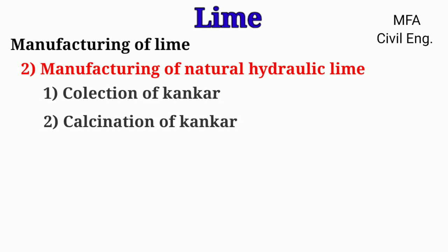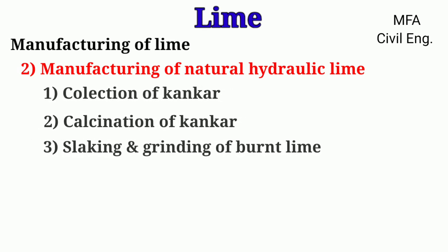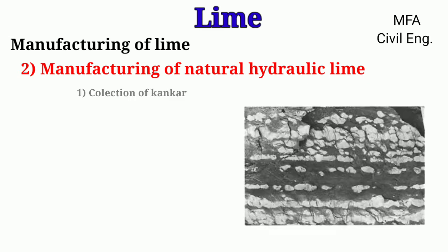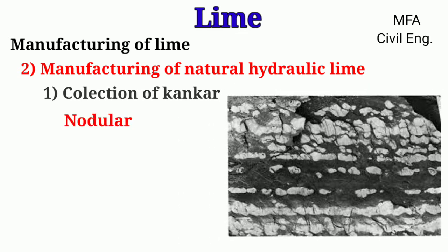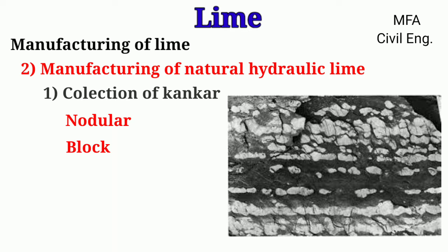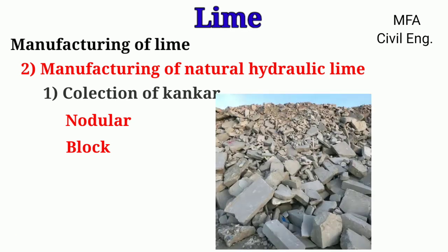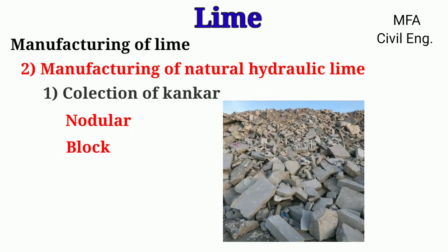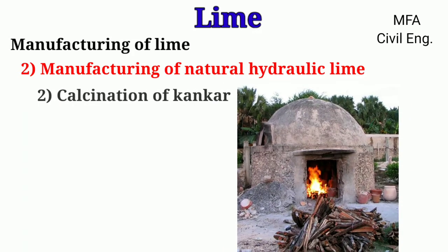The manufacturing of natural hydraulic lime consists of various steps: collection of conquer, calcination of conquer, and slaking and grinding of burnt lime. Conquer is available in two shapes: nodular and blocks. Blocks are impure limestones. The nodules of conquer are easy to collect and are a more superior material for manufacturing natural hydraulic lime. The nodules and blocks are quarried by means of a pickaxe and crowbar. After collection, conquer is cleaned of mud, converted into a suitable size, and then calcined in a clamp or kiln up to a bright red color.